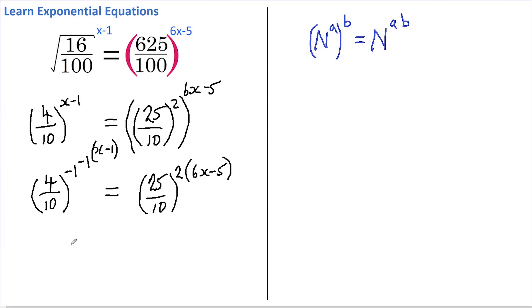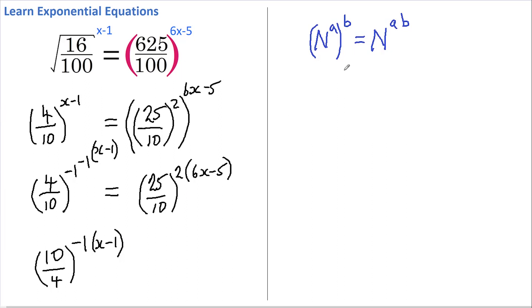Over on the left hand side I'm going to do a similar thing, but first I'll evaluate 4 over 10 to the power of minus 1. Negative 1 simply means invert, so I rewrite this as 10 over 4, all raised to the power of the second negative 1, multiplied by x minus 1. I bring this down in accordance with the same rule, and this still equals 25 over 10 to the power of 2 times 6x minus 5.